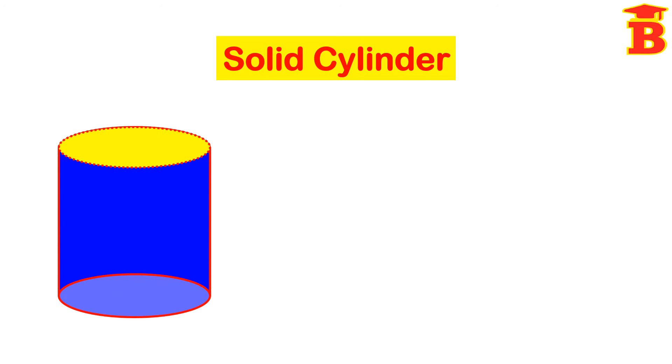Welcome to our channel Bright Mass. Let us learn about the solid cylinder. This is the shape of the cylinder. The radius is taken as R and the height is taken as H.